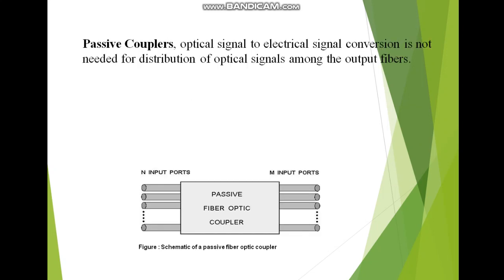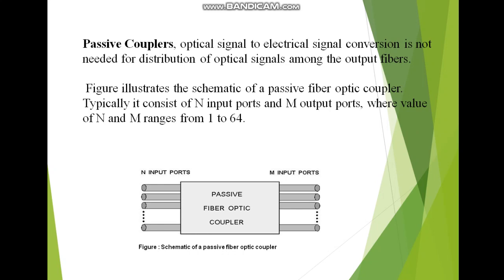In passive couplers, optical signal to electrical signal conversion is not needed for distribution of optical signals among the output fibers. Also, we don't need any external power supply. This is the basic diagram of a passive fiber optic coupler, in which we have N input ports and N output ports. The range is from 1 to 64, so we can have 1 input up to 64 inputs, with the same number of outputs.